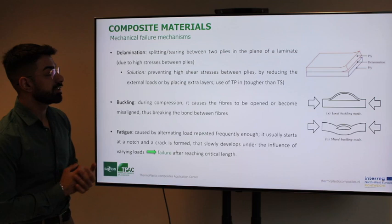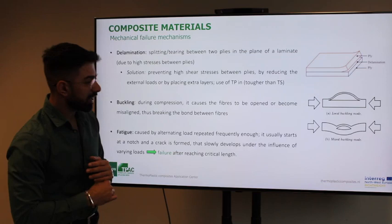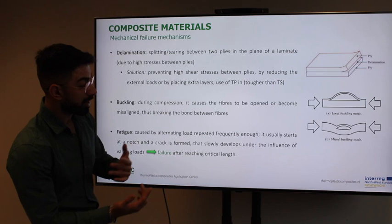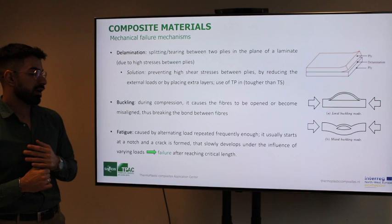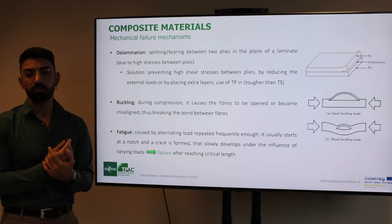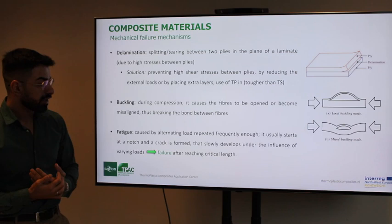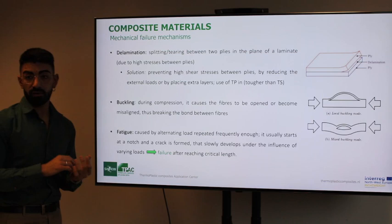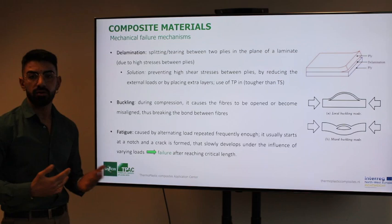Additional solutions for delamination include reducing external loads, placing extra layers, or using thermoplastic materials. Fatigue failure can be caused by alternating loads repeated frequently on the material. It usually starts at a notch, crack, void, or some imperfection in the composite and slowly develops under the influence of varying repeated loads, until critical failure occurs after reaching the critical state.